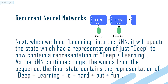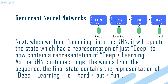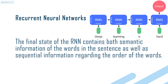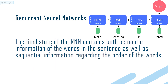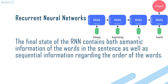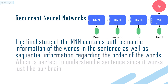As the RNN continues to get the words from the sequence, the final state contains the representation of "deep learning is hard but fun". The final state of the RNN contains both semantic information of the words in the sentence as well as sequential information regarding the order of the words.